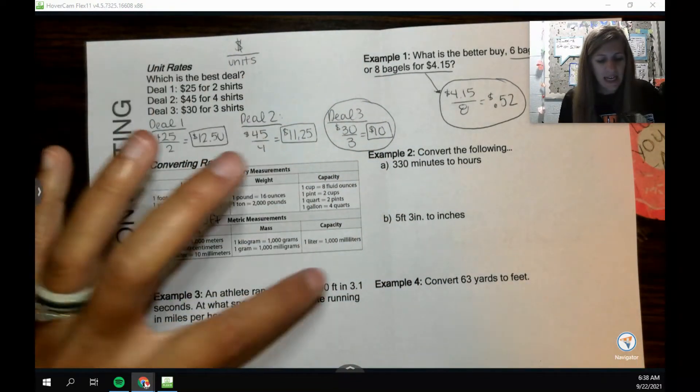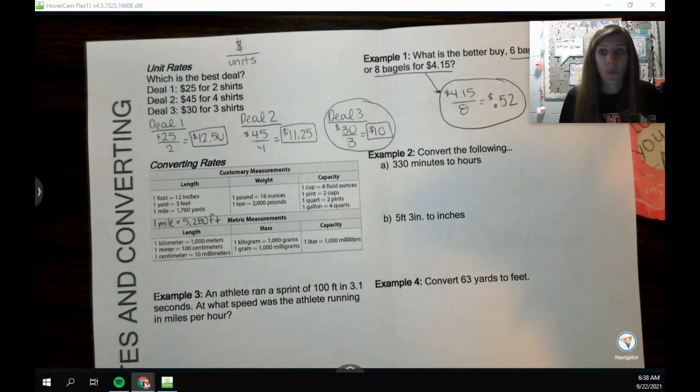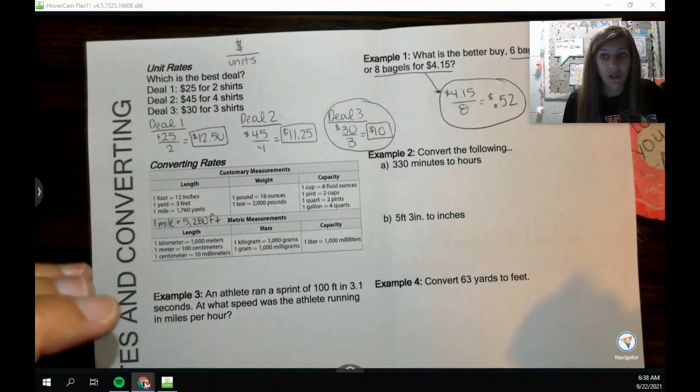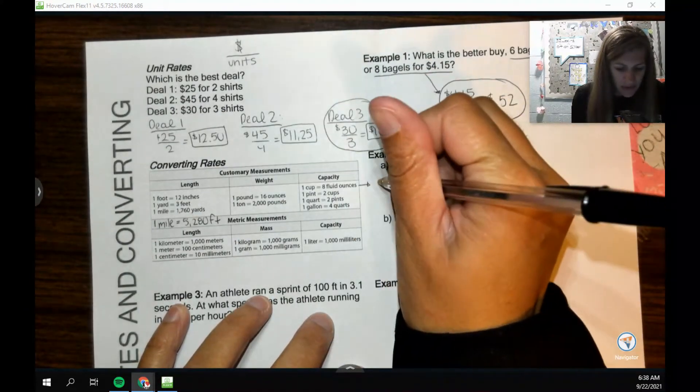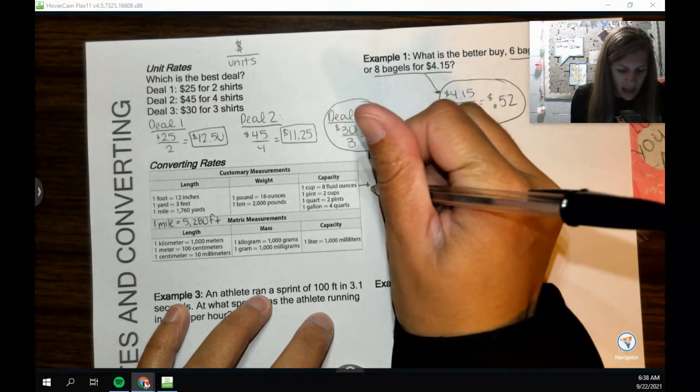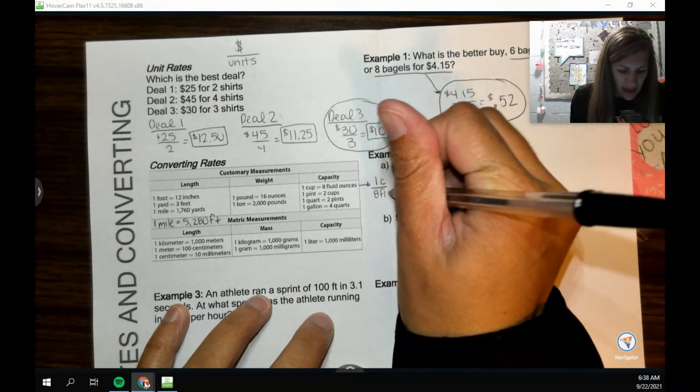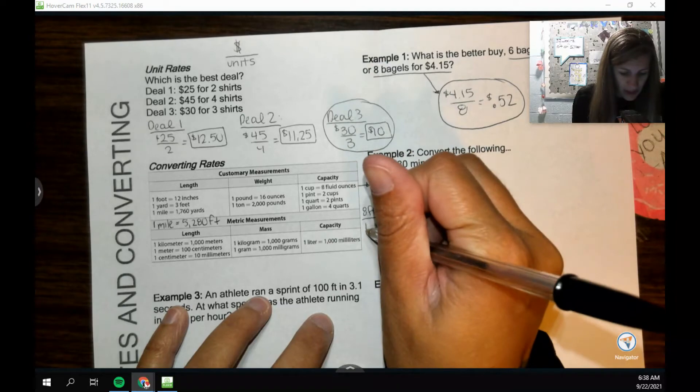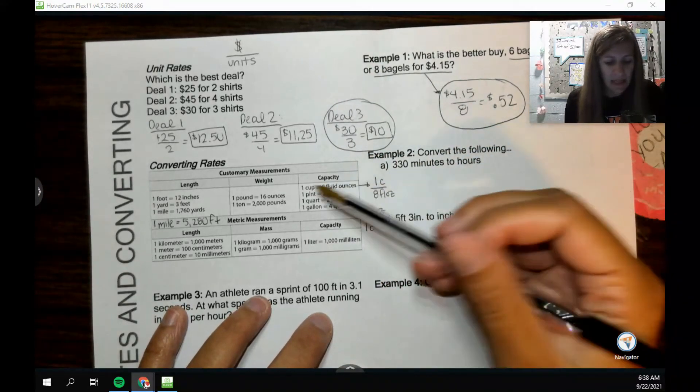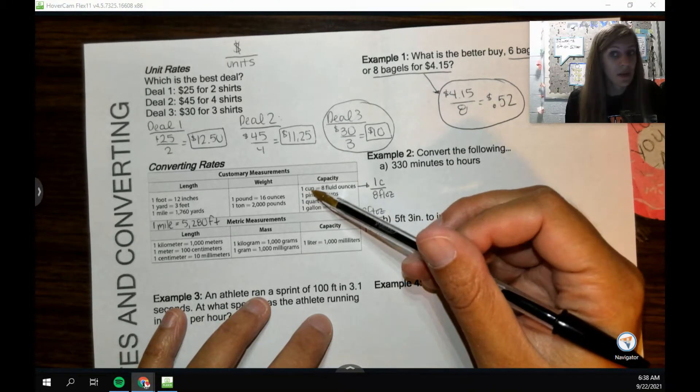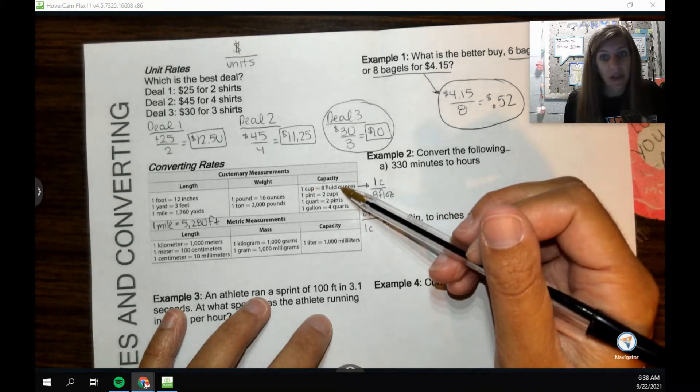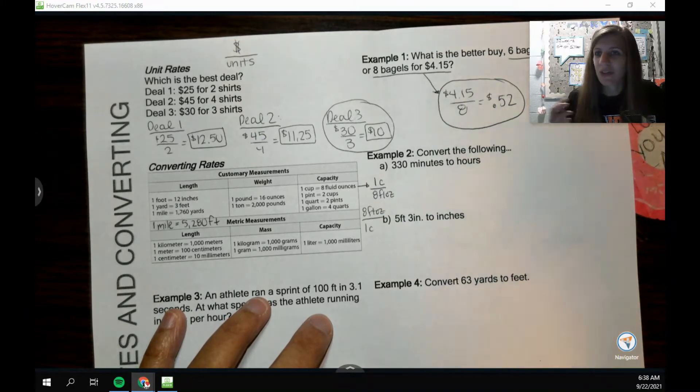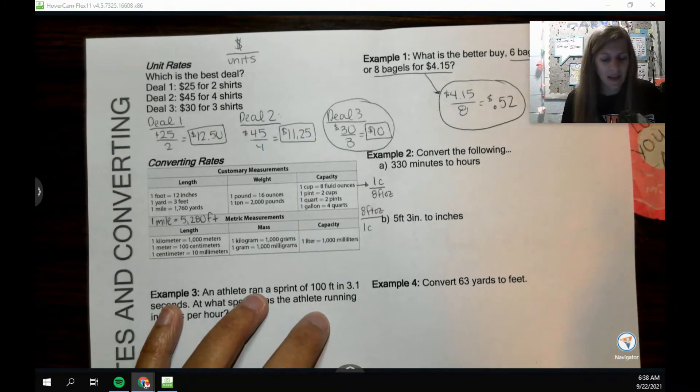The nice thing about this is when you're trying to convert one unit to another, you can use any of these equal things to write any fraction you want. For instance, this one cup to eight fluid ounces, I could write that as one cup over eight fluid ounces, or I can write it the other way, eight fluid ounces to one cup. But it is important that I always keep the number with its unit. The reason flipping the fractions is important is so that I can convert the right way.